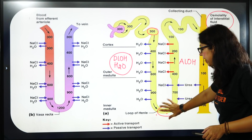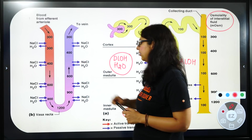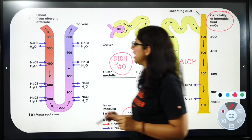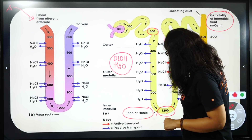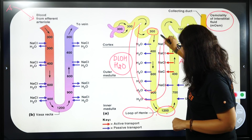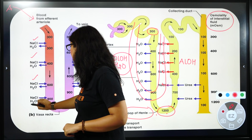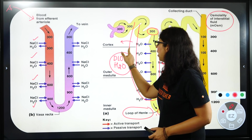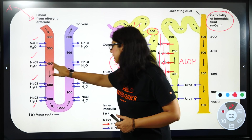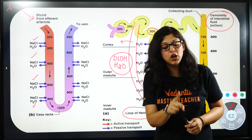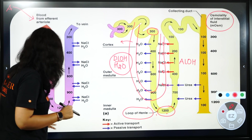इनके साथ साथ यह आपका loop of Henle है, और इसके साथ साथ यहाँ पर आपका Vasa recta है. Vasa recta में sodium chloride enter करता चला जा रहा है — और इधर जाकर वो बाहर निकल रहा है — it is entering, it is exiting — because of which the osmolarity of the medullary interstitium is constantly increasing. इसी वजह से descending limb of Henle से पानी बाहर आ रहा है.